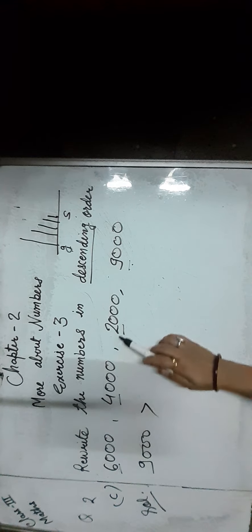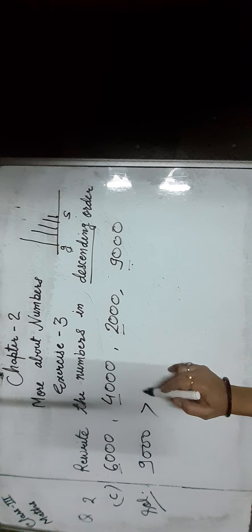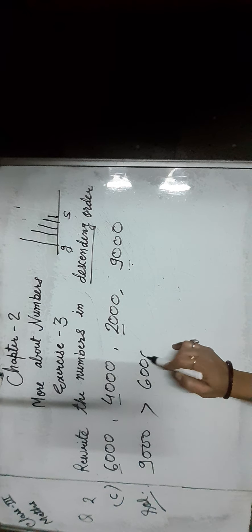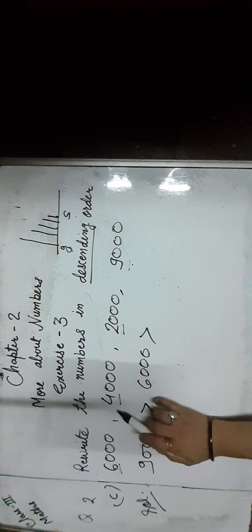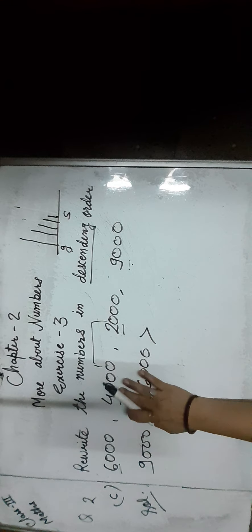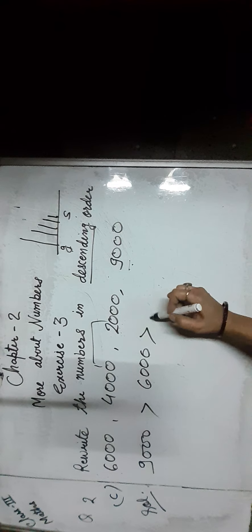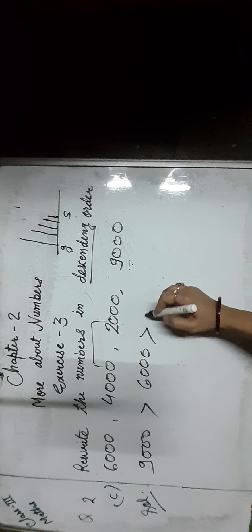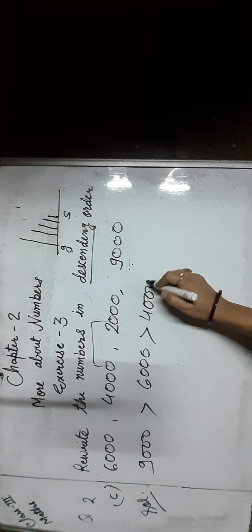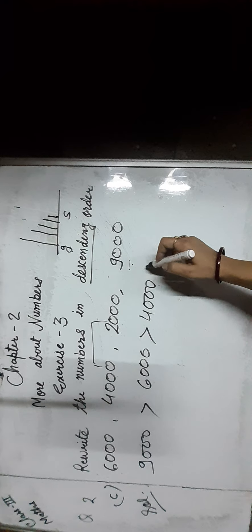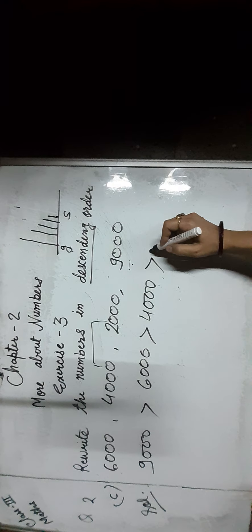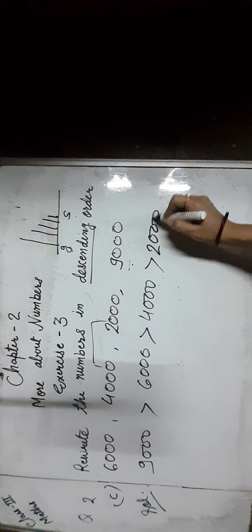Then 6 is greater than 4 and 2, so we write 6,000. Then compare the remaining numbers: 4 is greater than 2, so we move with 4,000. Then at last we write 2,000.